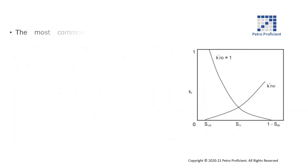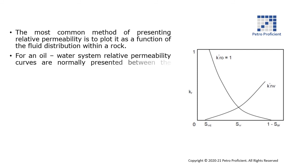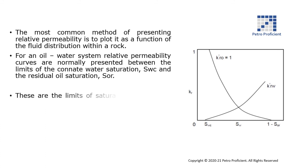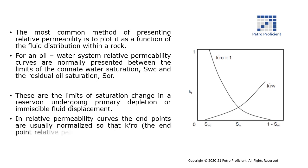The most common method of presenting relative permeability is to plot it as a function of the fluid distribution within a rock. For an oil-water system, relative permeability curves are normally presented between the limits of the connate water saturation and the residual oil saturation. These are the limits of saturation change in a reservoir undergoing primary depletion or immiscible fluid displacement. In relative permeability curves, the endpoints are usually normalized so that KRO, the endpoint relative permeability to oil, is one, as shown in the figure.